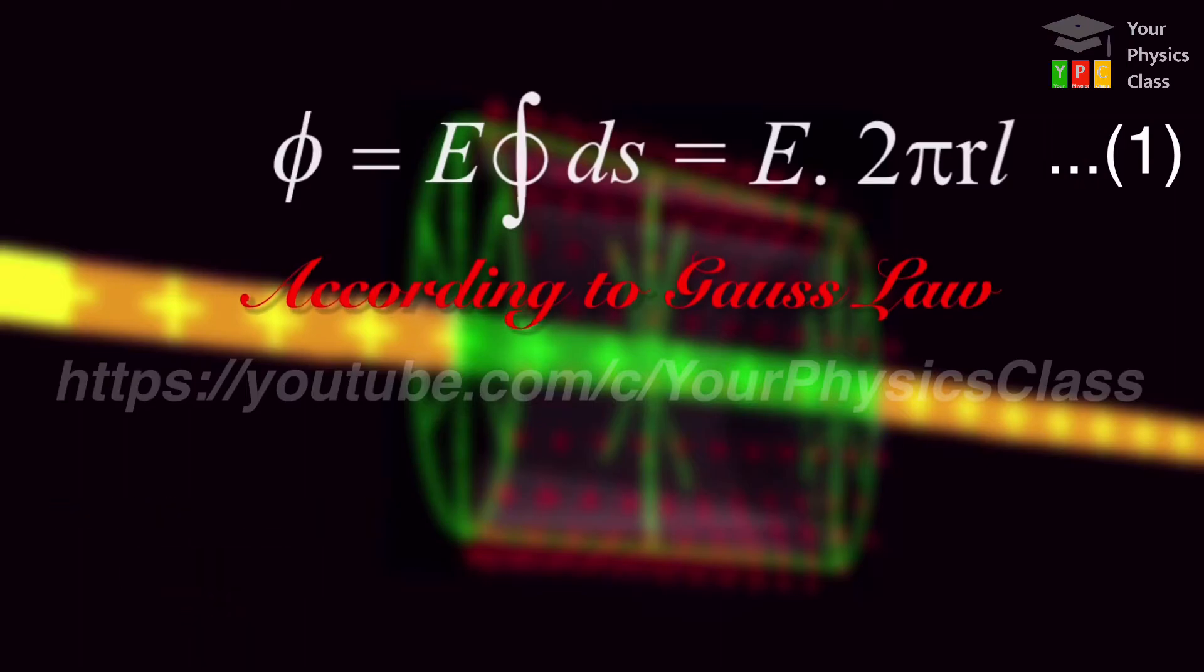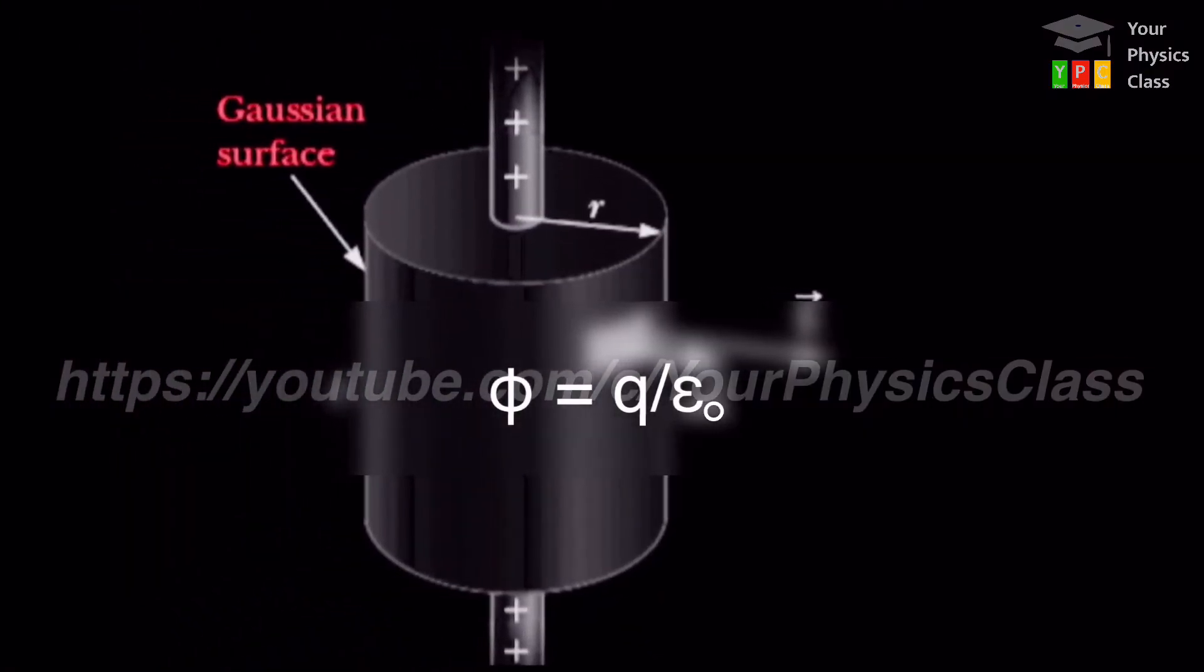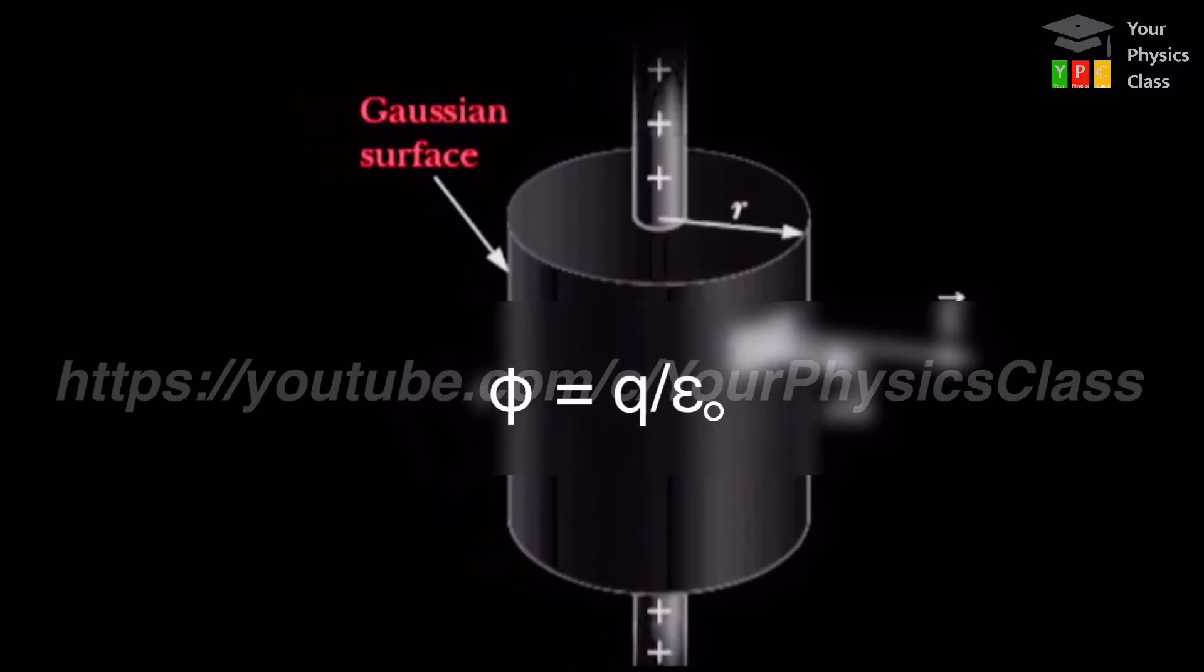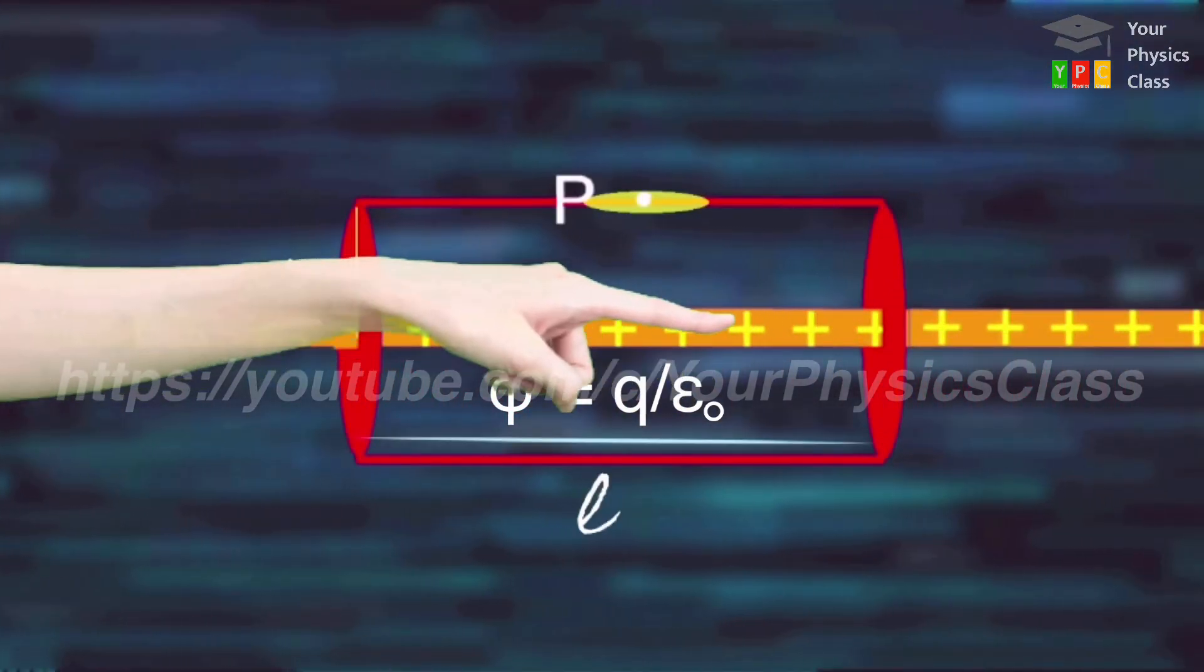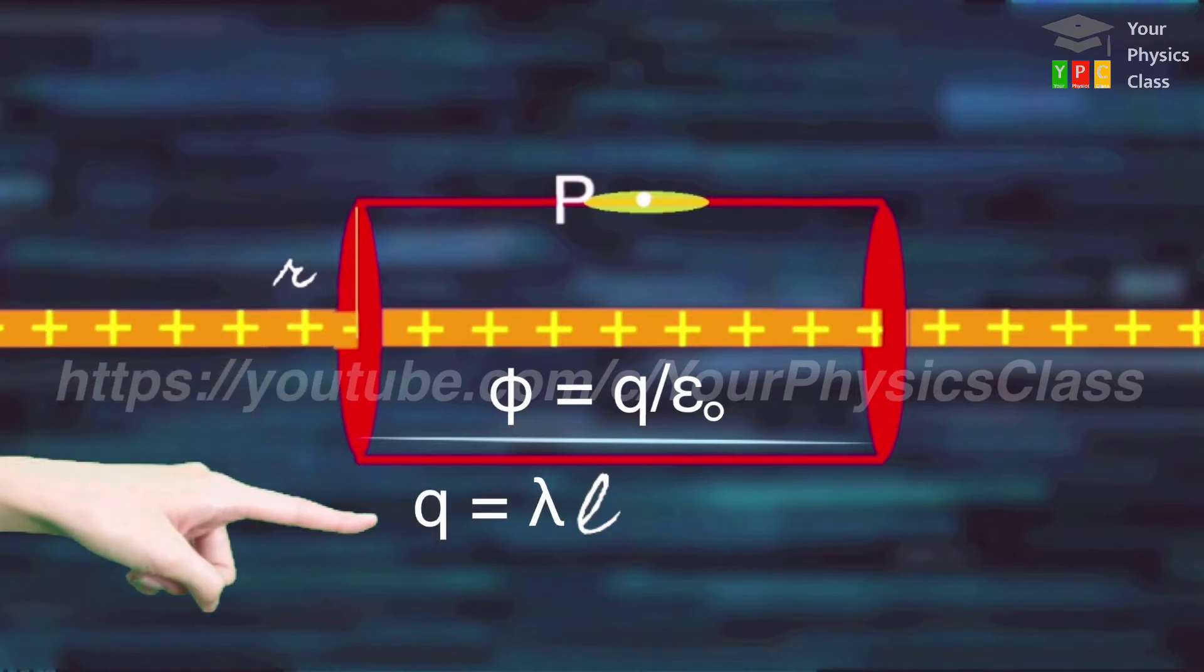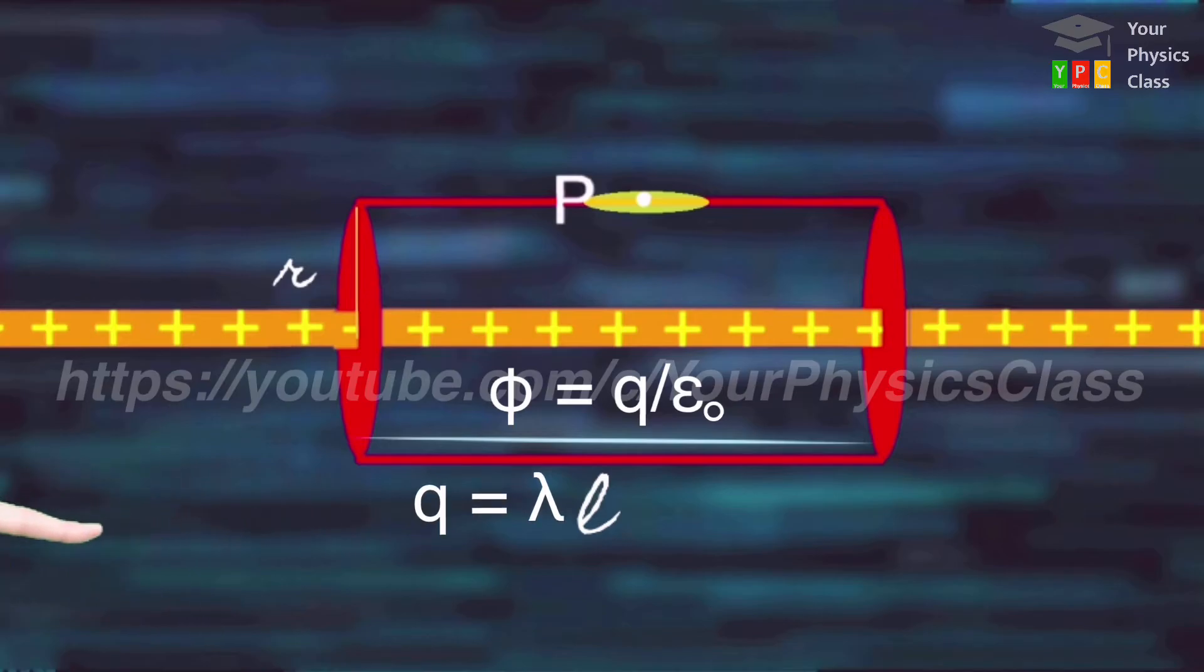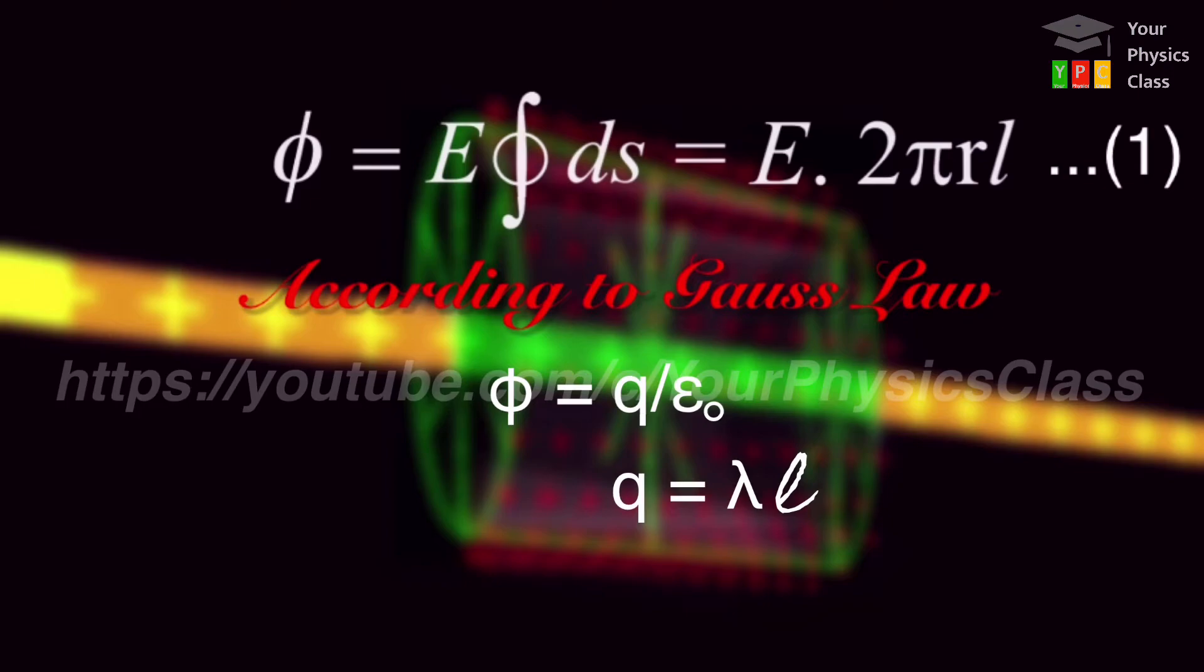According to Gauss law, the net electric flux through any closed surface is given by charge enclosed divided by epsilon zero. Here, charge enclosed can be calculated by charge per unit length lambda into length of the cylinder l. So substituting this value we'll have phi equal to lambda l divided by epsilon zero.